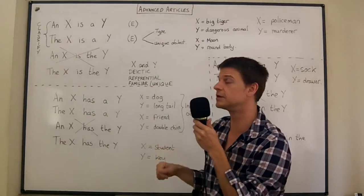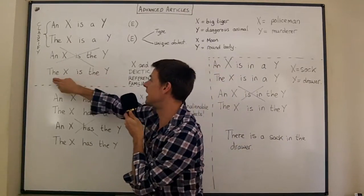And at the end of the story maybe the detective has deduced that the policeman is the murderer. Which murderer? The murderer in this book. And so that's when we would need the and the together.